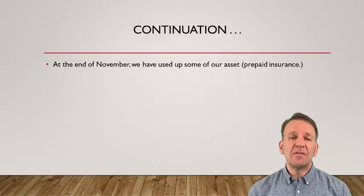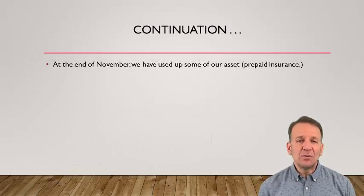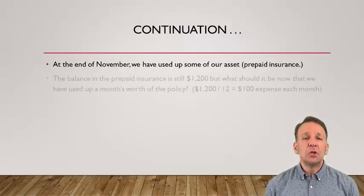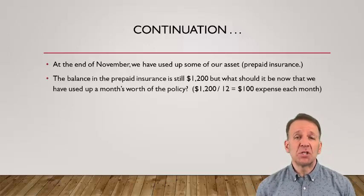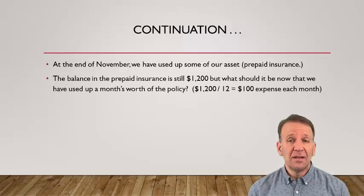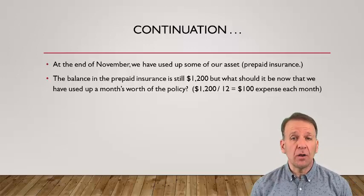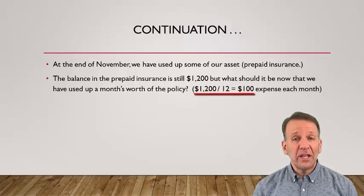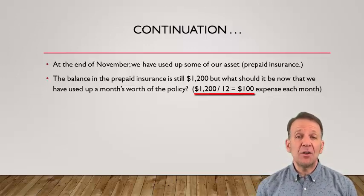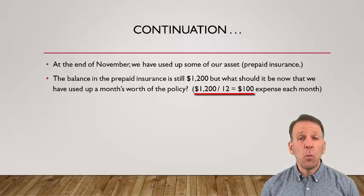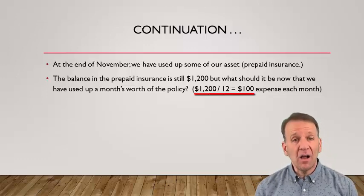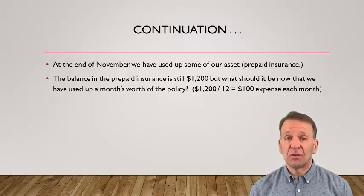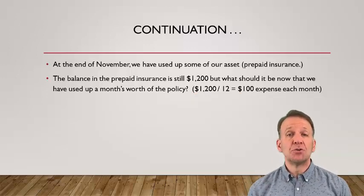Let's assume that it's the end of November. We have now used up one month's worth of our insurance policy. You will recall that we have the insurance policy in an account called prepaid insurance. It is an asset and it has a balance of $1,200. But is our policy really worth $1,200 still? You've noticed that it should be reduced in value by $100 — we've used up one twelfth of our policy. We need to adjust the account at the end of November to reflect its true balance. We do this by preparing an adjusting journal entry.